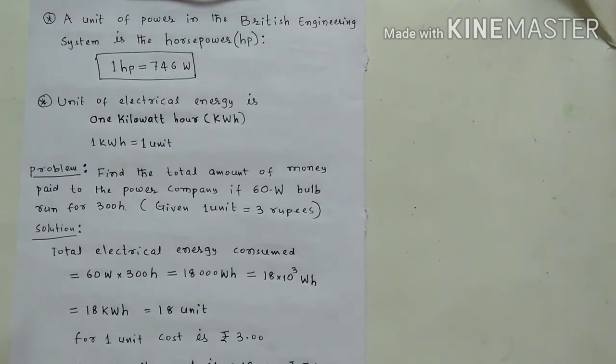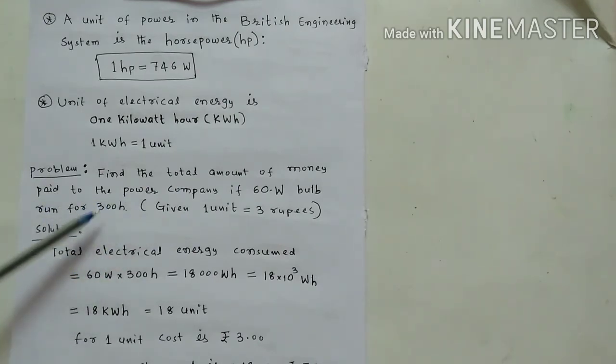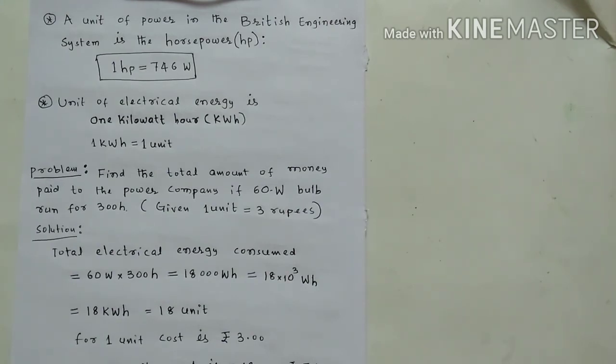30 days, so 300 hours. So if it is glowing 300 hours, how much money we have to pay? That we are going to calculate now.